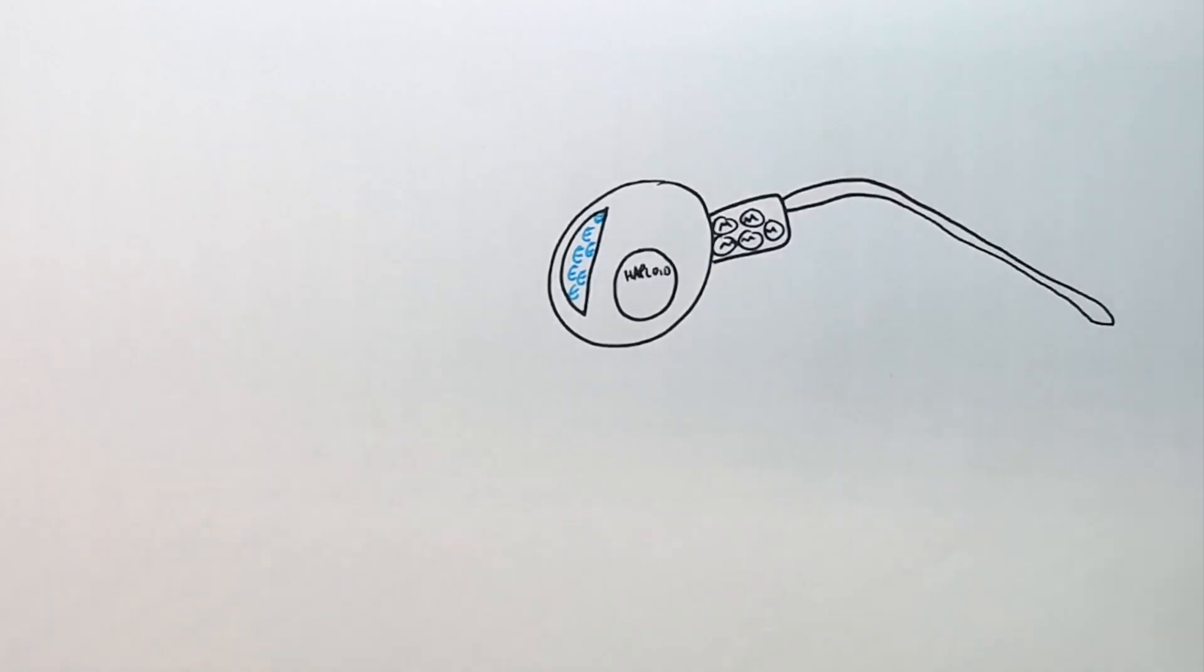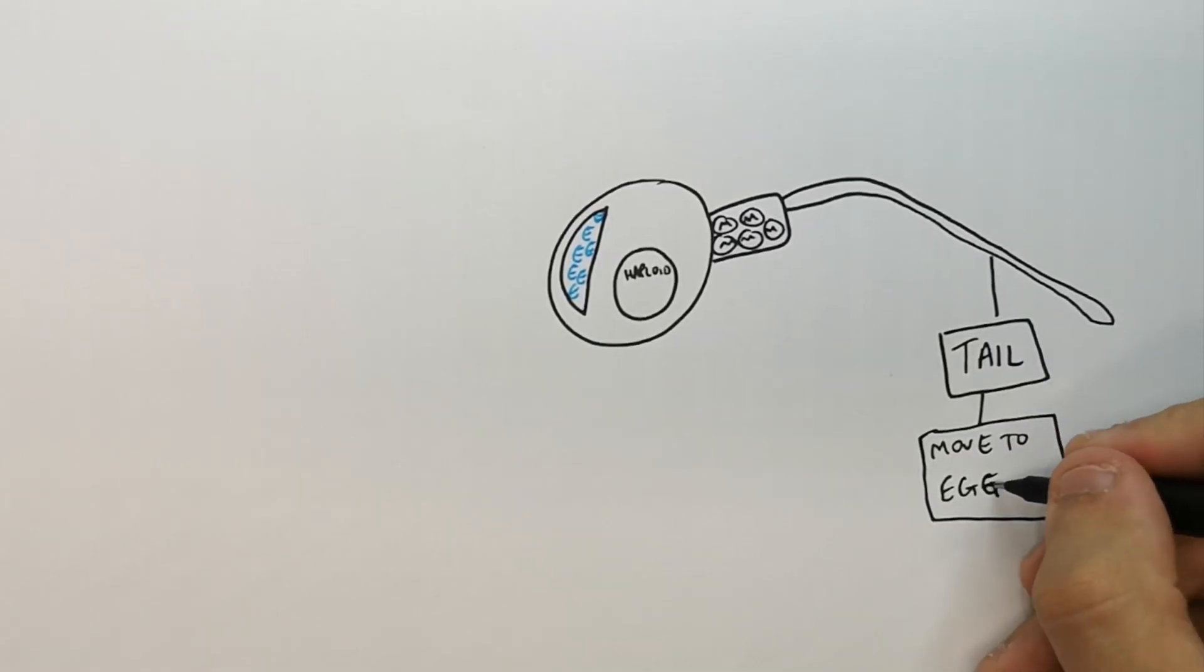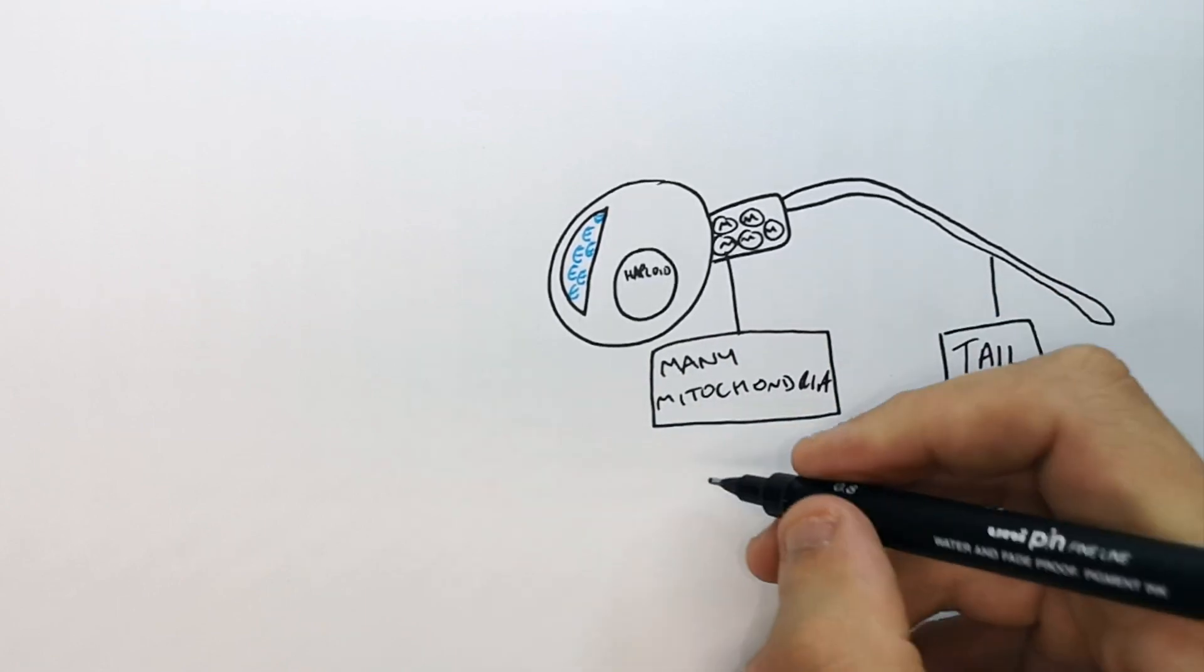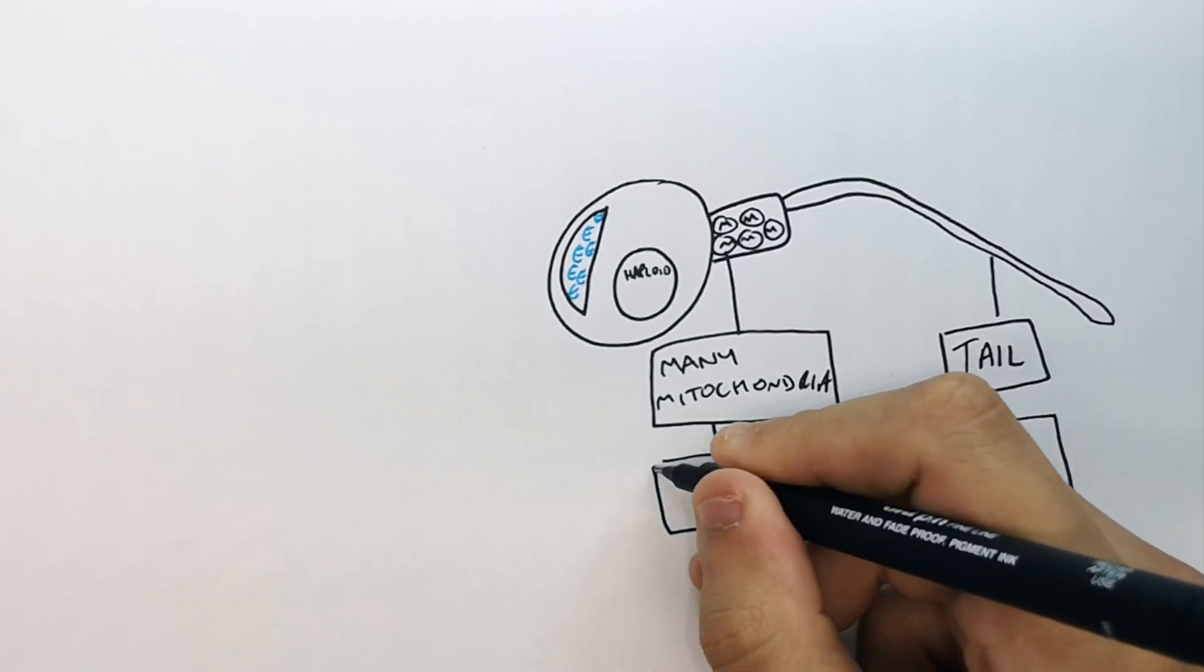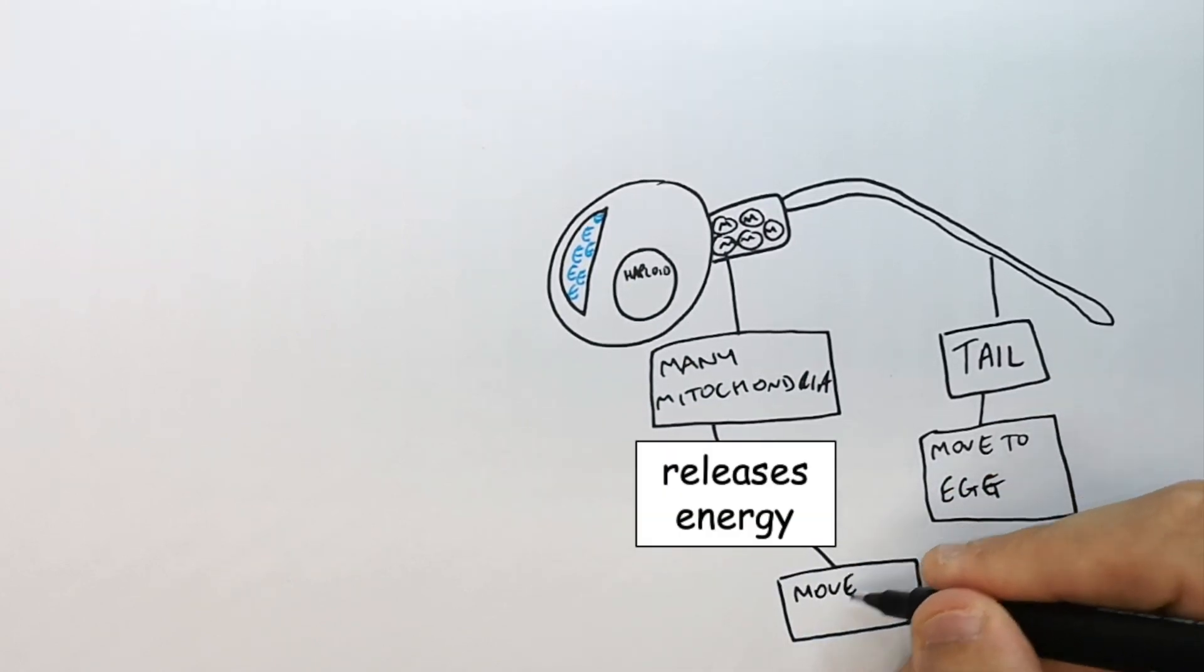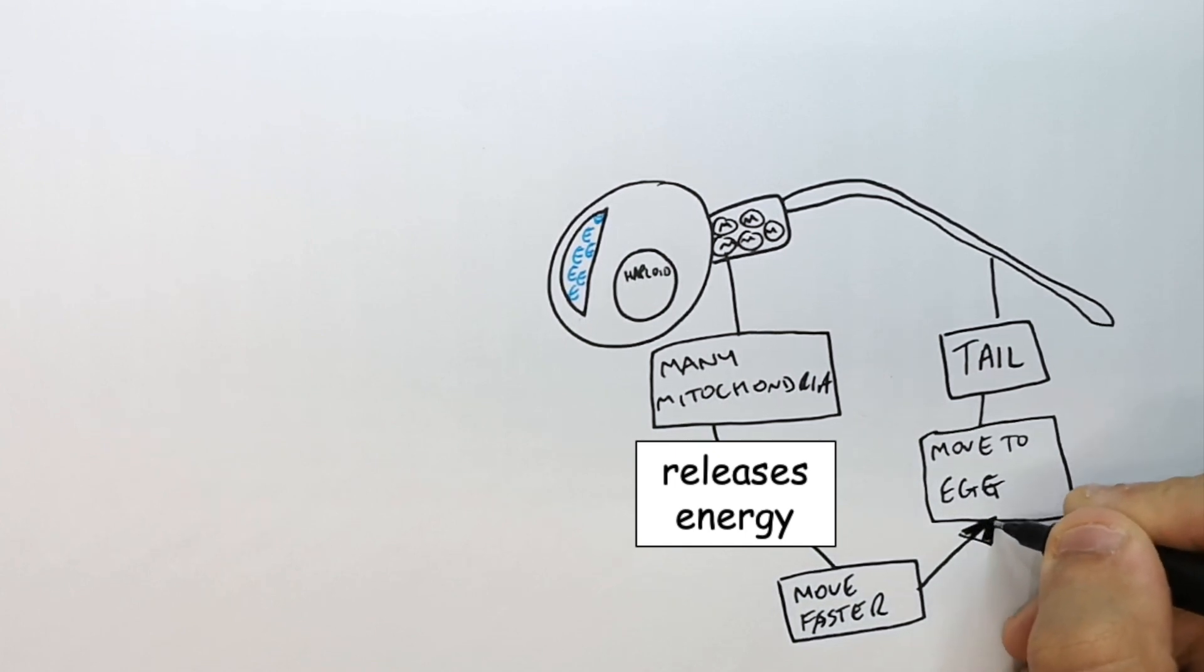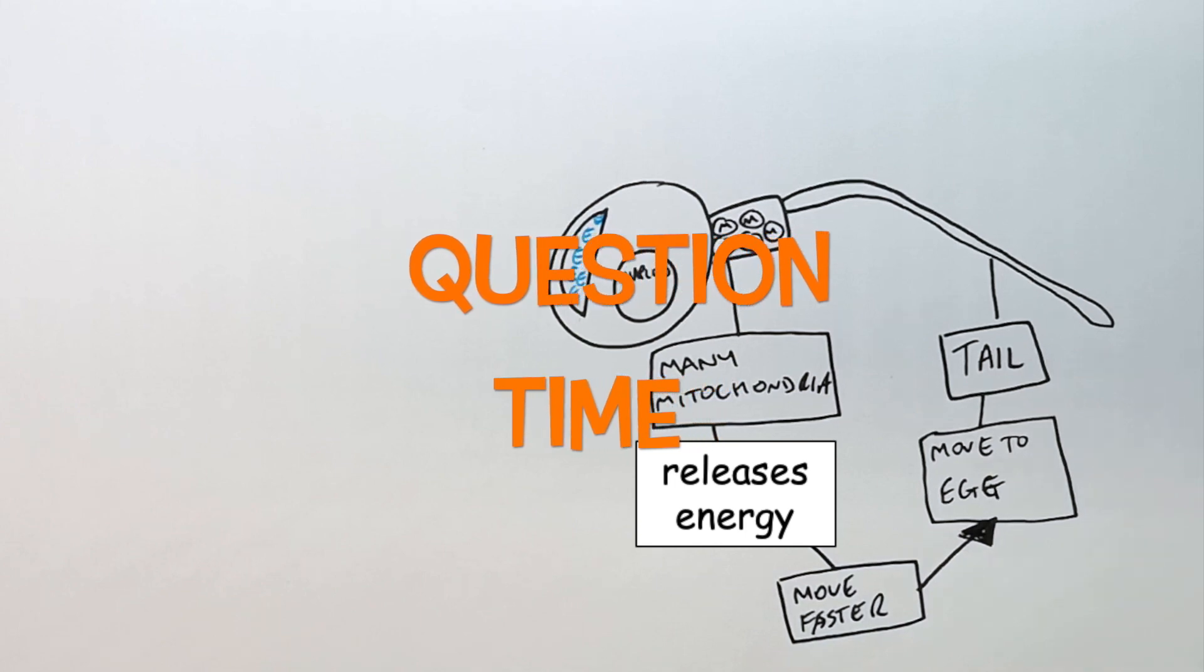The sperm has a tail so it can move to the egg. Sperm has many mitochondria, which are organelles that release energy. This allows the sperm to move faster towards the egg, so there is a higher chance of fertilization. It's question time - attempt these questions to check your understanding.